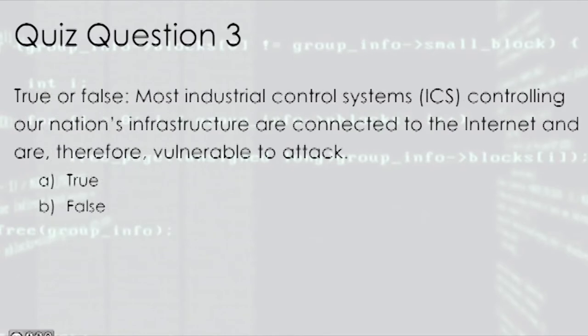Quiz Question 3 — True or False: Most industrial control systems (ICS) controlling our nation's infrastructure are connected to the internet and are therefore vulnerable to attack. The answer is true.